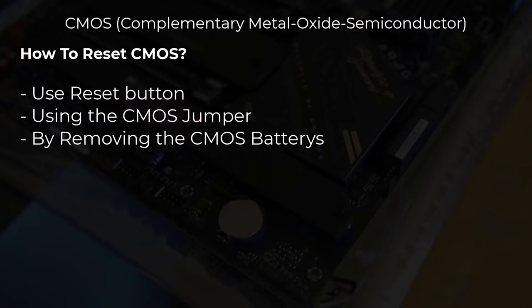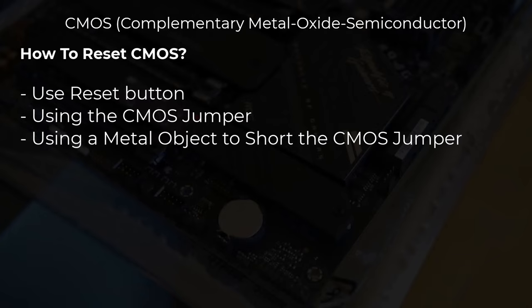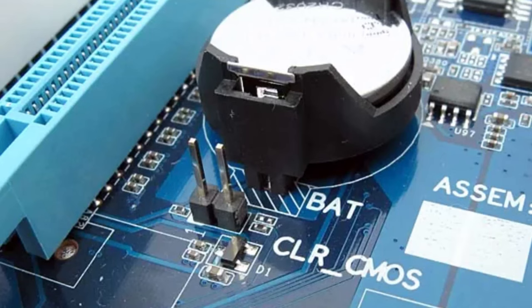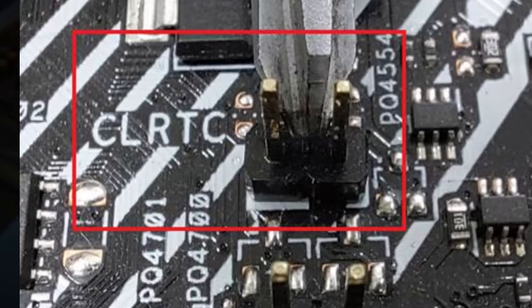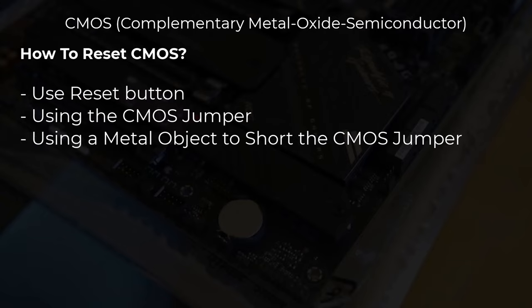Method 3 is using a metal object to short the CMOS jumper. Turn off your computer and unplug it from the power source. Locate the CMOS jumper. Use a small metal object like a screwdriver to short the two pins on the jumper for a few seconds. Remove the metal object, then plug in your computer and turn it on. These methods should help you clear the CMOS and reset BIOS/UEFI settings to their factory defaults.